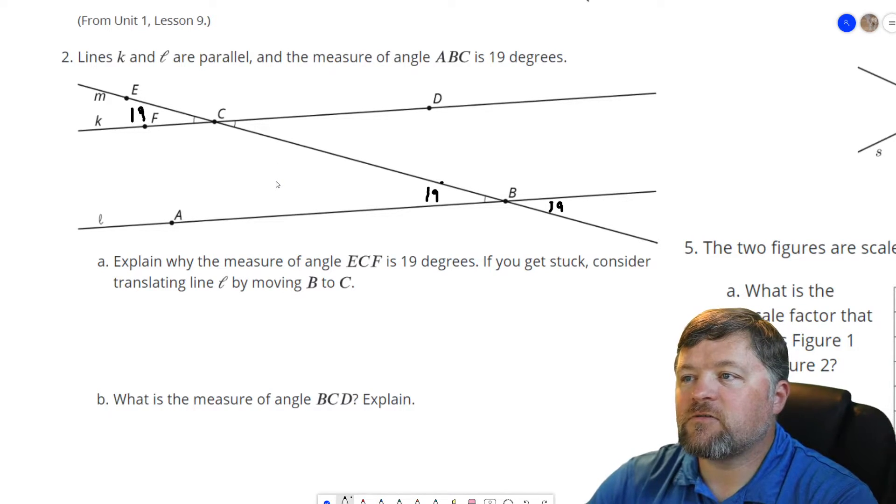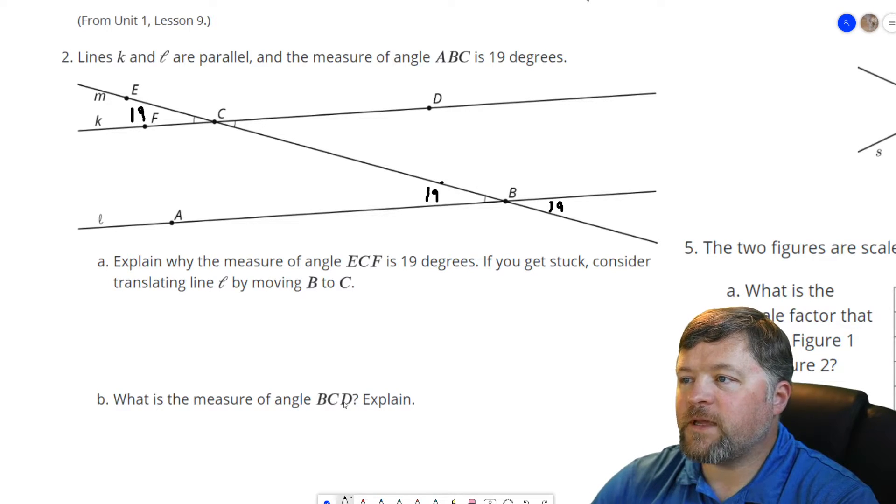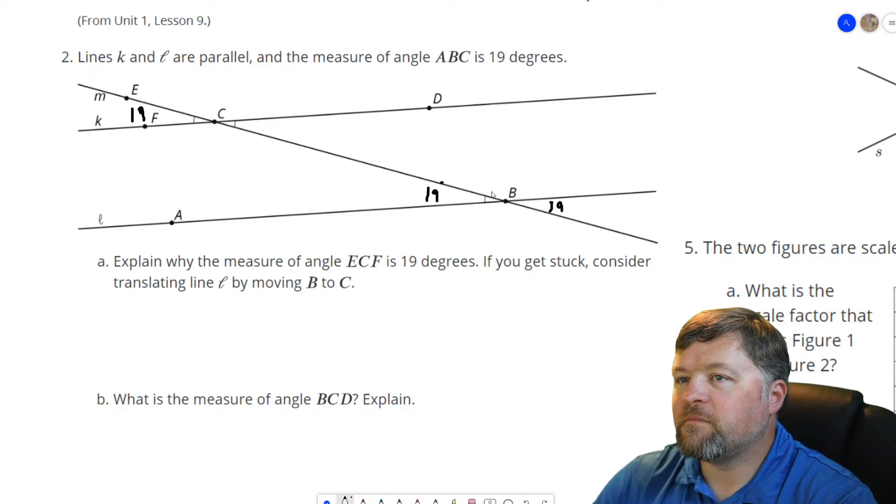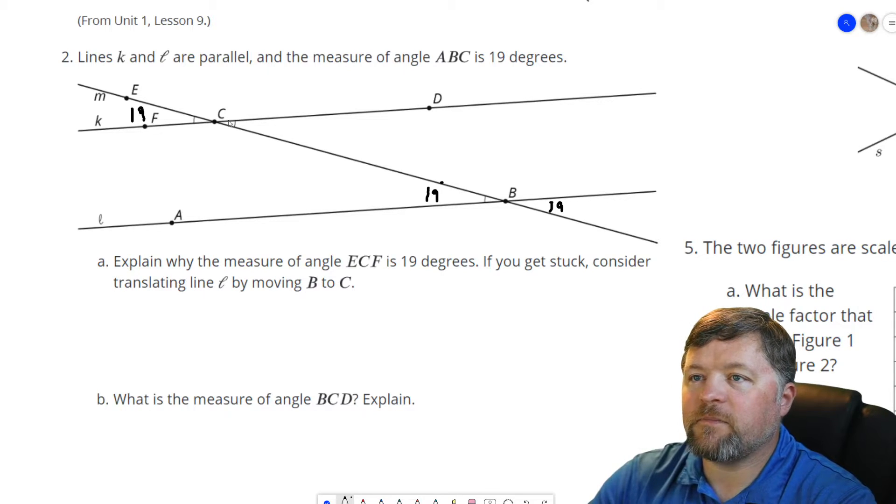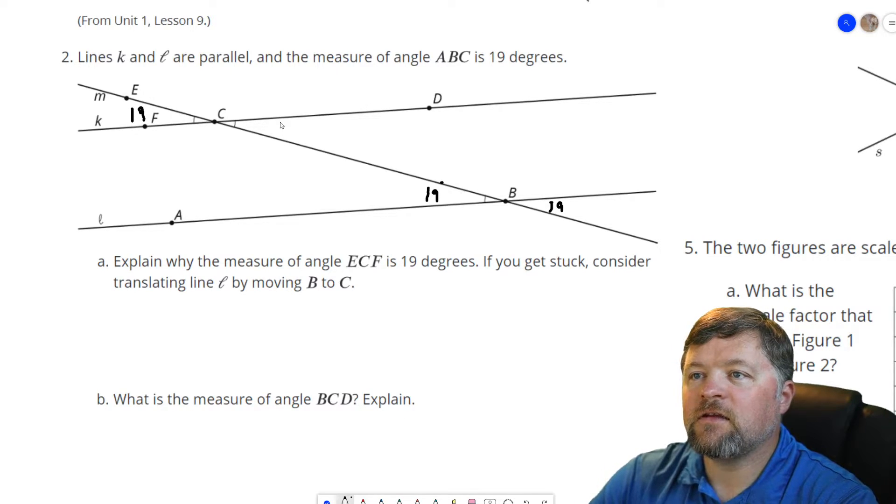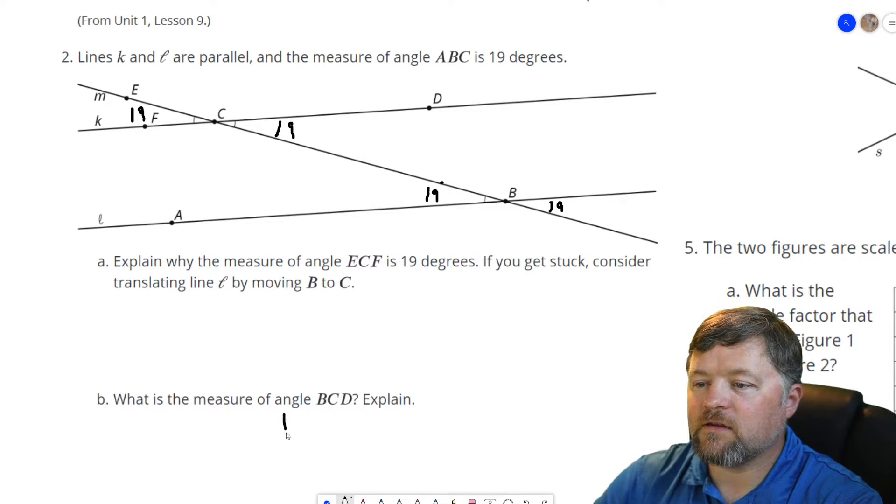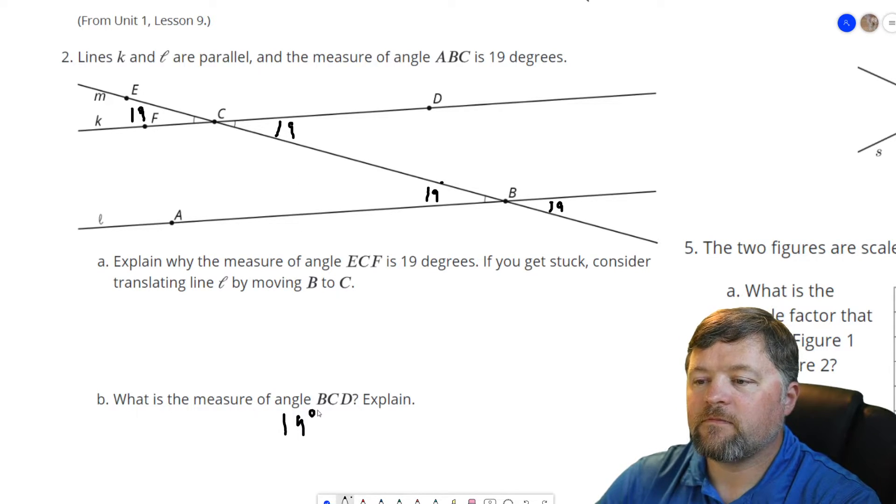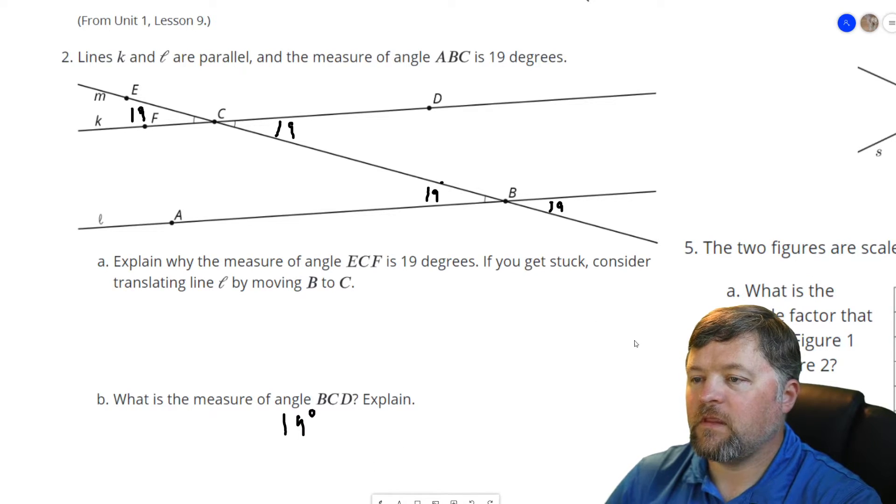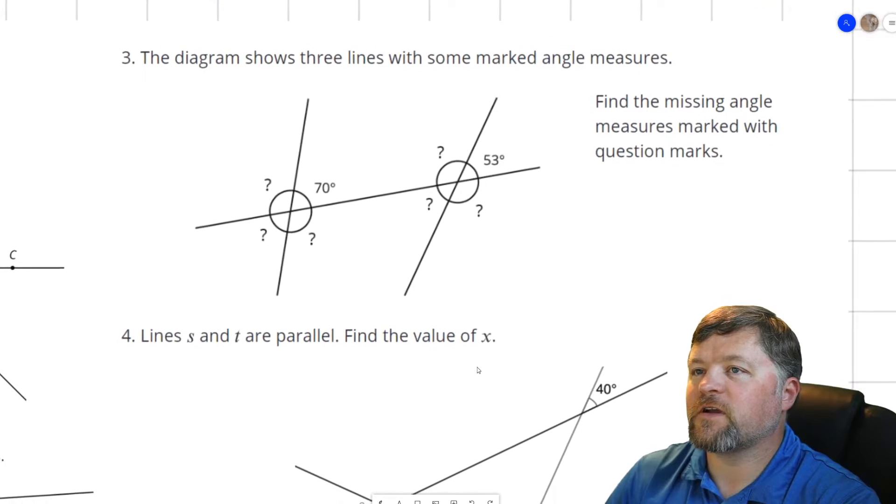That is also 19 degrees. What's the measurement of BCD? BCD, that's this angle here. And if we know that this is 19, this is a vertical angle to that, so that is also 19. Okay, our first problems there were lots of 19 degrees over and over again.